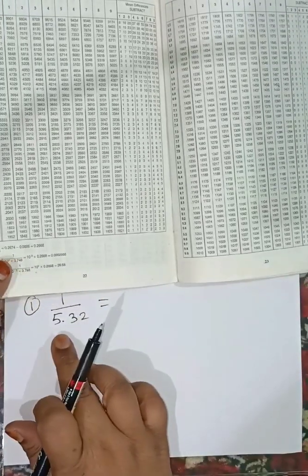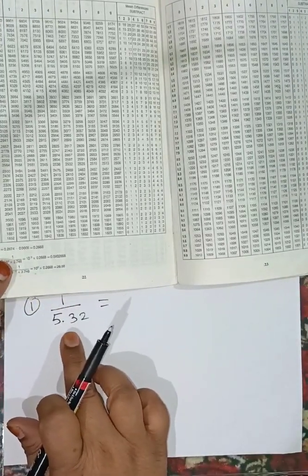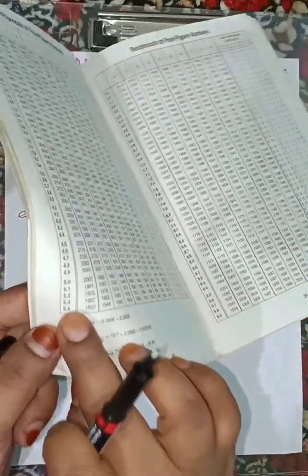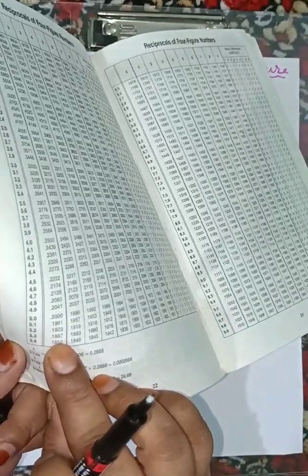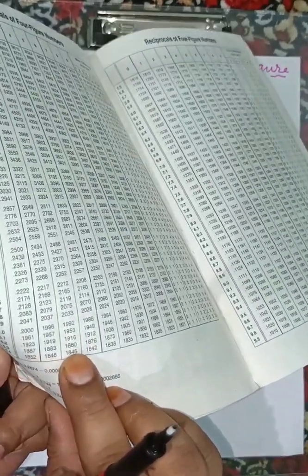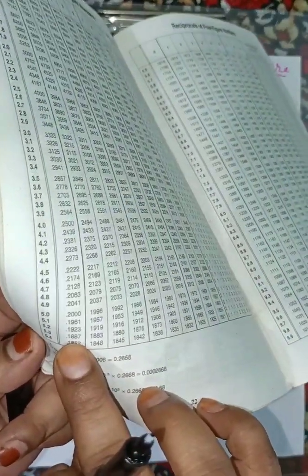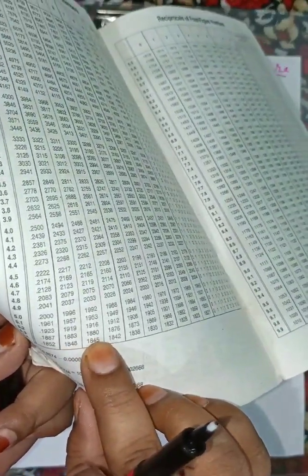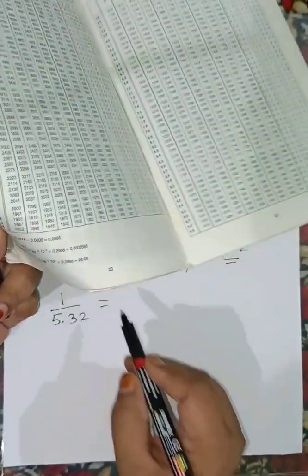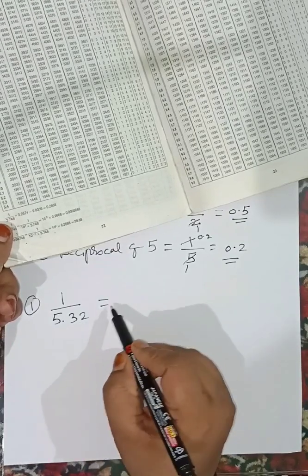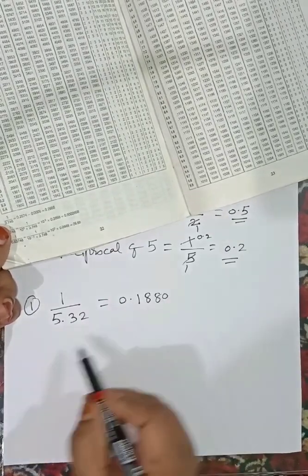Now, the reciprocal of 5.32 means 1 divided by 5.32. We look up row 5.3, then column 2. Reading the value: 1, 8, 8, 0 — with a decimal point in front. So the reciprocal of 5.32 is equal to 0.1880.